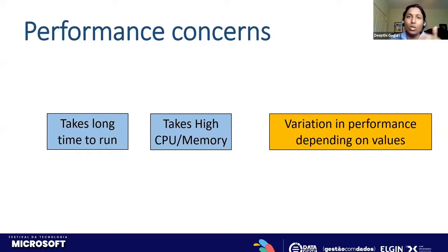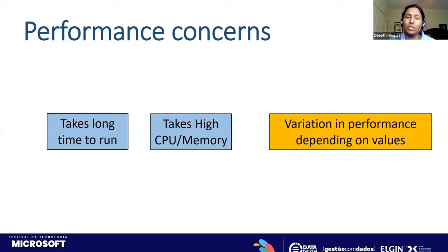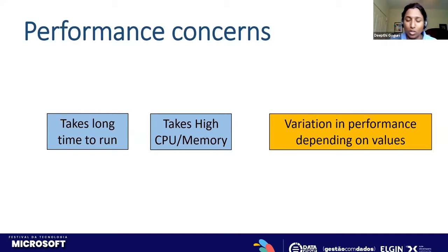What are our main performance concerns on a regular basis? We all have queries that run really slowly and we don't know why. Some queries take a long time, some take high CPU and memory. And there are those weird queries: for some parameters they run very quickly, but the same query with different parameters takes forever and will not complete. In this session, we are mainly focusing on this variation in performance depending on parameters — those parameter-sensitive queries.